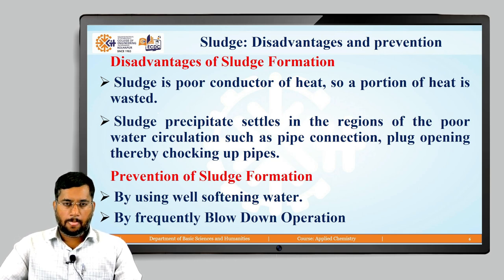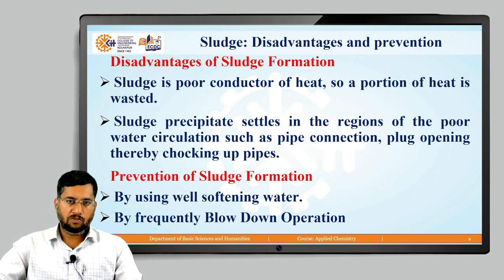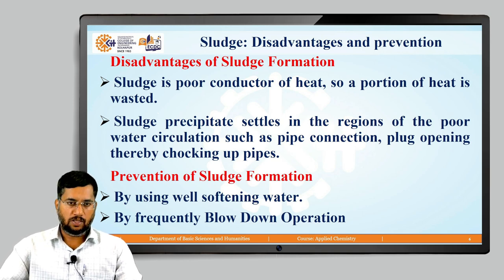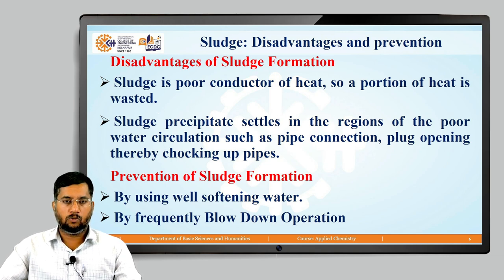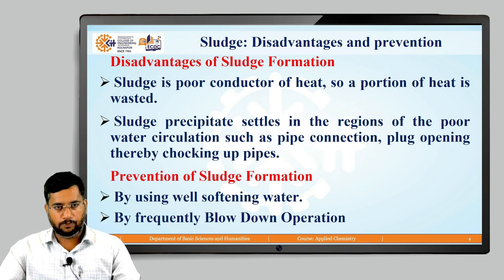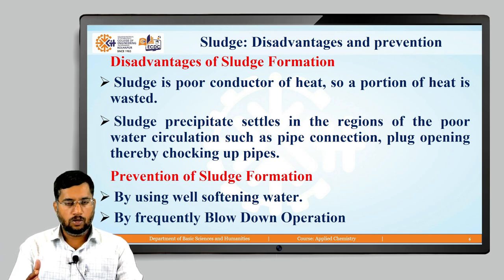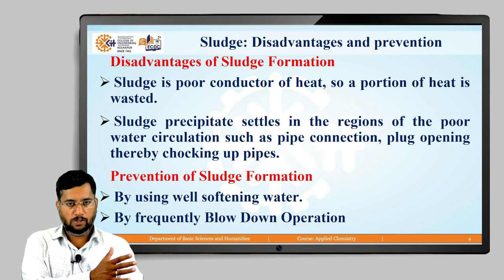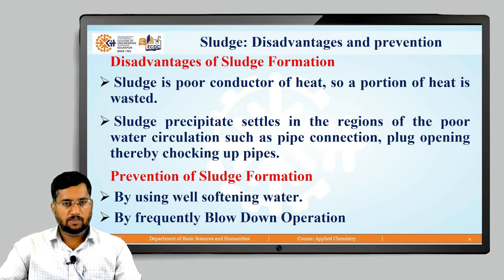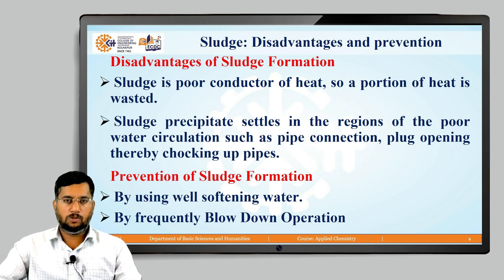To prevent sludge formation: before feeding water to the boiler, remove dissolved impurities using various water softening processes. Also, frequent blow-down operations — a sudden flow of water — can remove the loose and slimy sludge precipitate, which typically forms at the colder portions of the boiler.